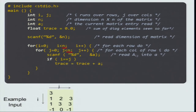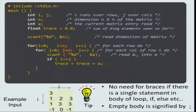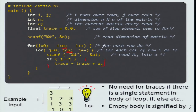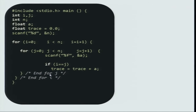Let us look at a sample input: 2, 0, minus 1, 1, 3, 4, minus 1, 0, 1. Initially there is the number 3, so we know it is a 3 cross 3 matrix. Once you read n equals 3, you start with i equal to 0 and go on until i less than n, incrementing i by 1 each time. Since i is 0 and i is less than n which is 3, you enter the outer loop. The first statement of the outer loop is itself a for loop — you start with j equal to 0, j is less than 3, so you enter the inner loop.